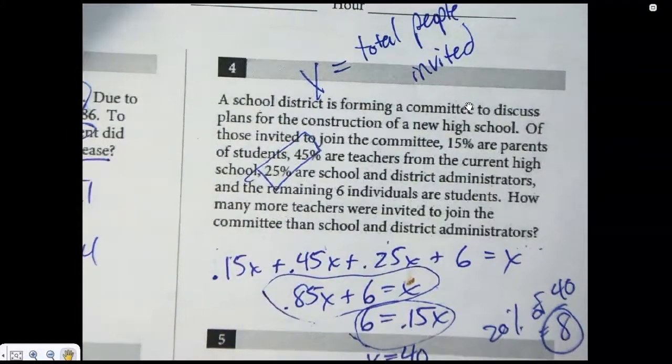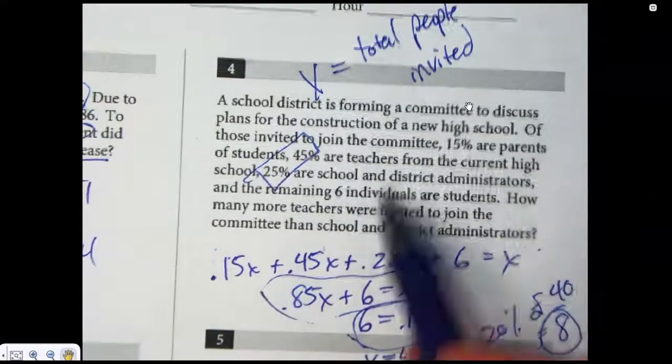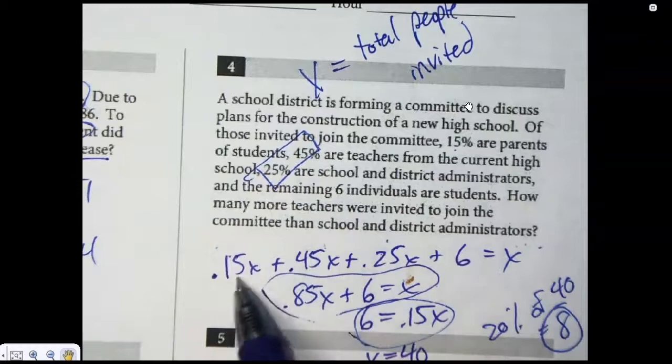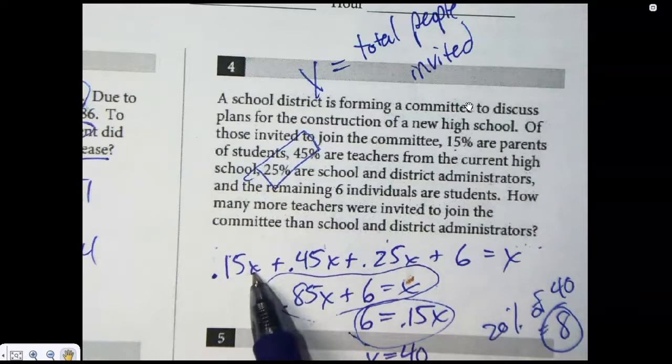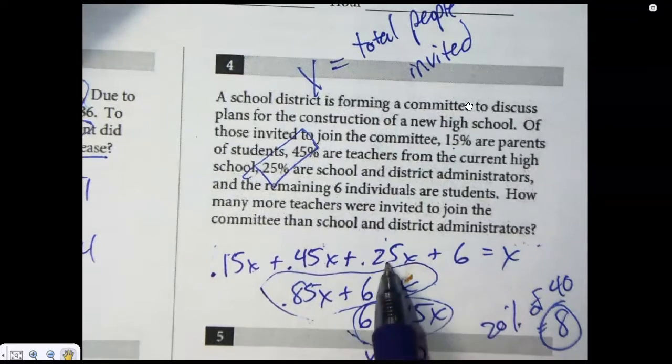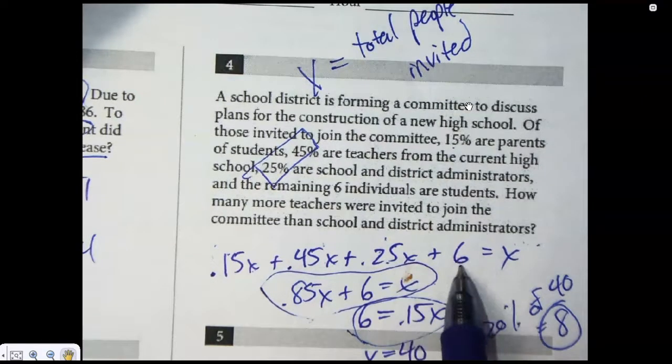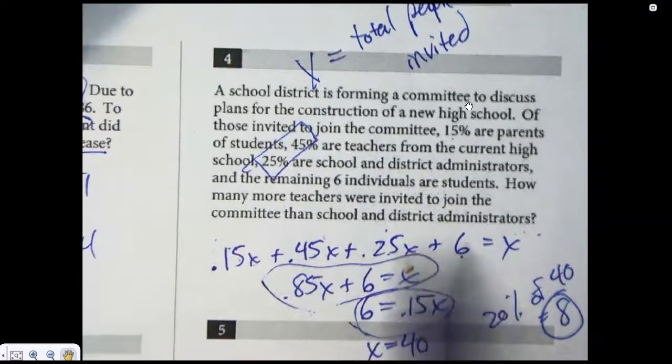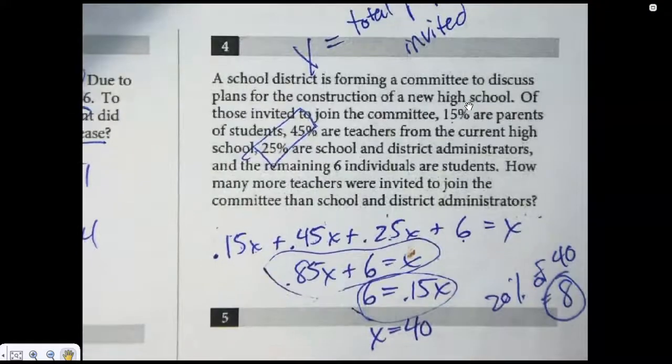And it made sense to me to set up an algebra equation. Again, it's not the only way to do it. I know Mr. Craft did it a little bit different way. But I said 15% of the total people, so 0.15 times x, 15% of total people are parents. 45% of the total people, so 0.45 times x, are teachers and 25% are administrators. And then I got to add these other six people. And when I add up all of these four, there's kind of four sections, I get x. I get the total number of people.